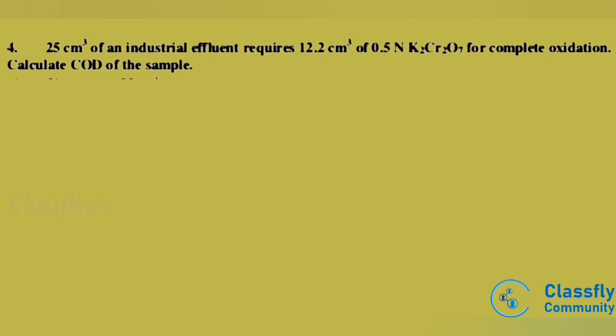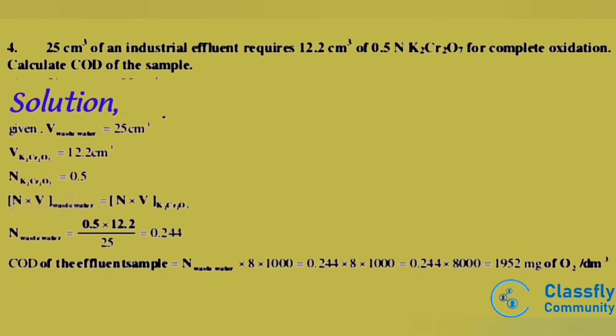Fourth problem: 25 cm³ of an industrial effluent requires 12.2 cm³ of 0.5 N K2Cr2O7 for complete oxidation. Calculate the COD of this sample. Solution: given that V(waste water) = 25 cm³, V(K2Cr2O7) = 12.2 cm³, and N(K2Cr2O7) = 0.5.